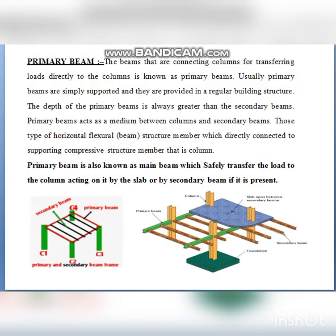The beams that connect columns, or connect to secondary beams, for transferring loads directly to the column are known as primary beams. Usually, primary beams are simply supported and are provided in a regular building structure during construction. The depth of the primary beam is always greater than the secondary beam. These beams are horizontal flexural members directly connected to the column member.